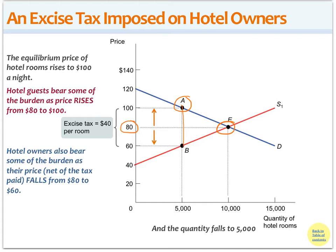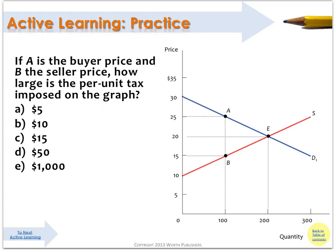The pain is not necessarily always split 50-50 between buyers and sellers. Here's a practice question for you — take a minute to answer. And here comes the answer. If you are looking for a tax, you want to look at the vertical distance between the buyer and the seller price. In this case, $25 minus $15 equals $10.